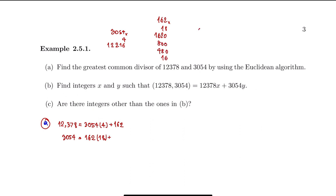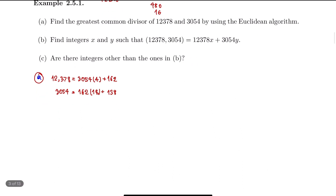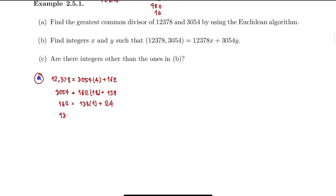162 times 18 gives us 2,916, so the remainder is 138. Then we divide 162 by 138: 162 equals 138 times 1 plus 24. Next we divide 138 by 24, and the quotient is 5 because 24 times 5 is 120.